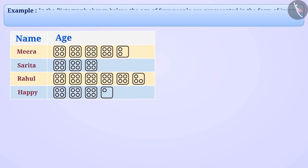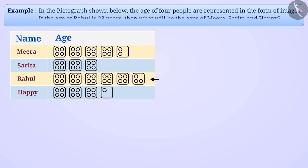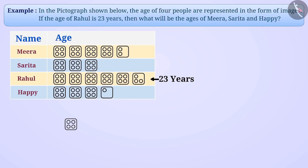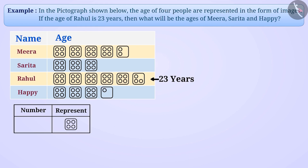In the next pictograph, the ages of 4 people are represented in the form of images. If the age of Rahul is 23 years, find the ages of Meera, Sarita, and Happy. We see that one image has been repeated many times, and this image has been used to represent age. To solve the question, we need to find what age value each image represents.